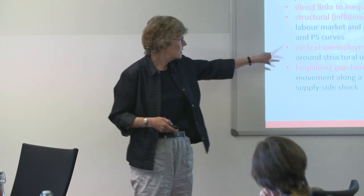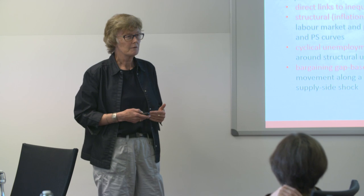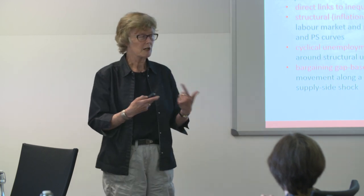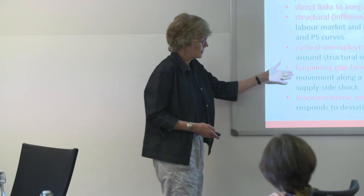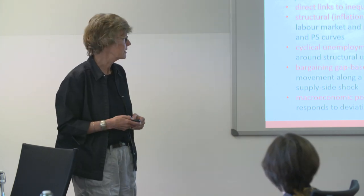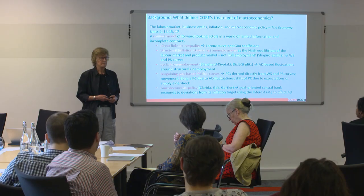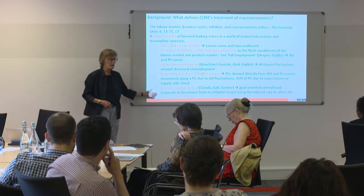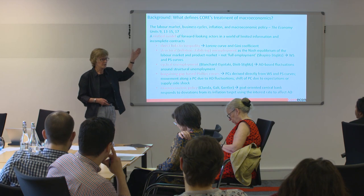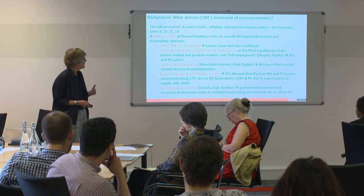We talk about cyclical unemployment — Blanchard, Kiyotaki, Dixit-Stiglitz — that's the research analog of the model we're using. We have aggregate demand-based fluctuations around structural unemployment, a bargaining-gap-based Phillips curve derived from the wage-setting and price-setting curves, and movements along the Phillips curve arising from fluctuations in aggregate demand. The bits all fit together: from the very first micro steps of the firm interacting with the employee, up to inflation and macroeconomic policy — presented in the simplest Clarida-Gali-Gertler way, a three-equation model with a goal-oriented central bank.